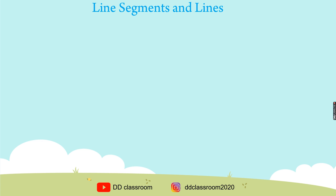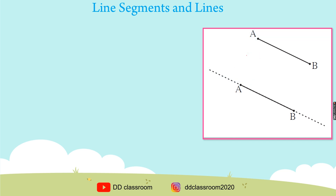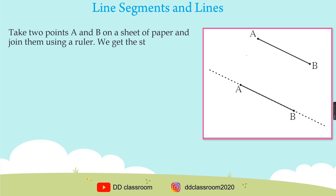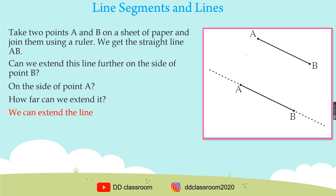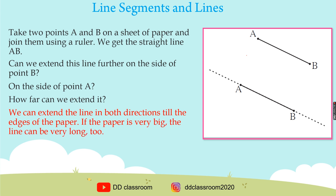Line segments and lines. Take two points A and B on a sheet of paper and join them using a ruler. We get the straight line AB. Can we extend this line further on the side of point B? On the side of point A? How far can we extend it? We can extend the line in both directions till the edges of the paper. If the paper is very big, the line can be very long too.